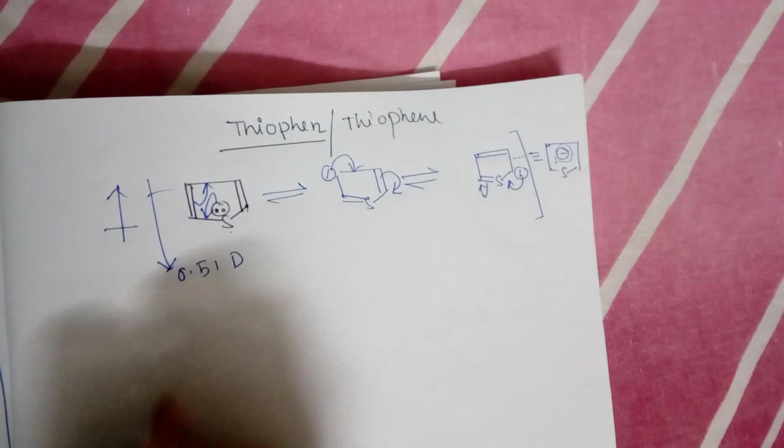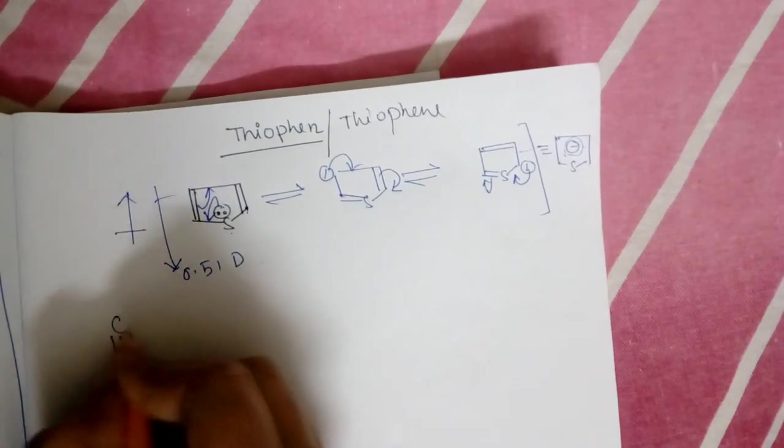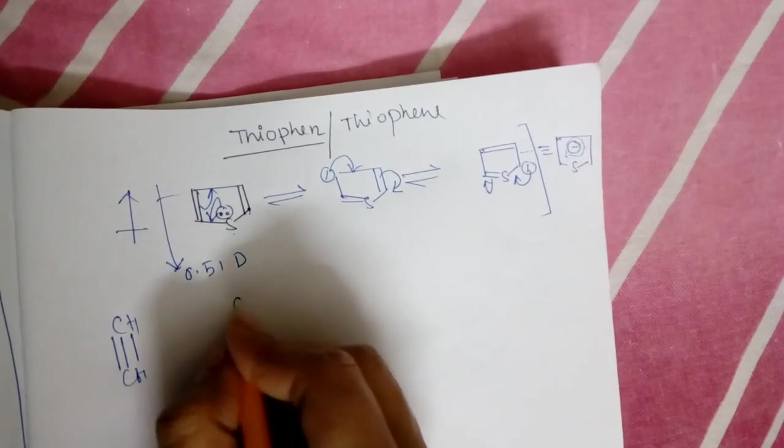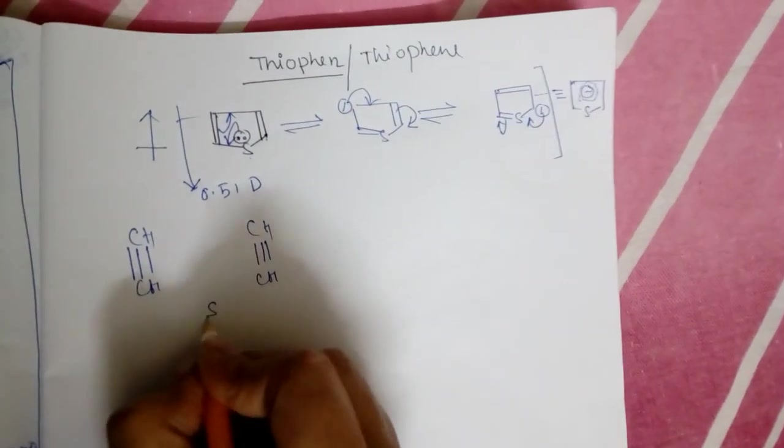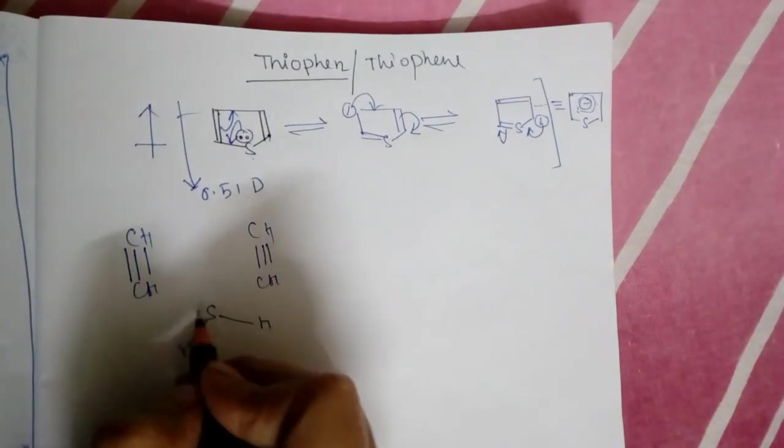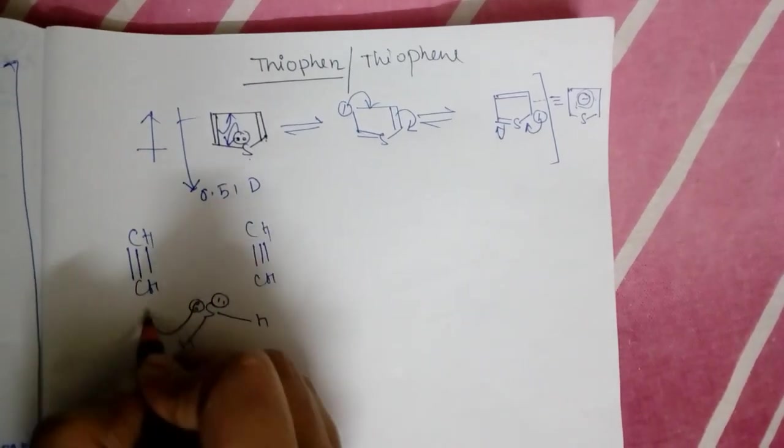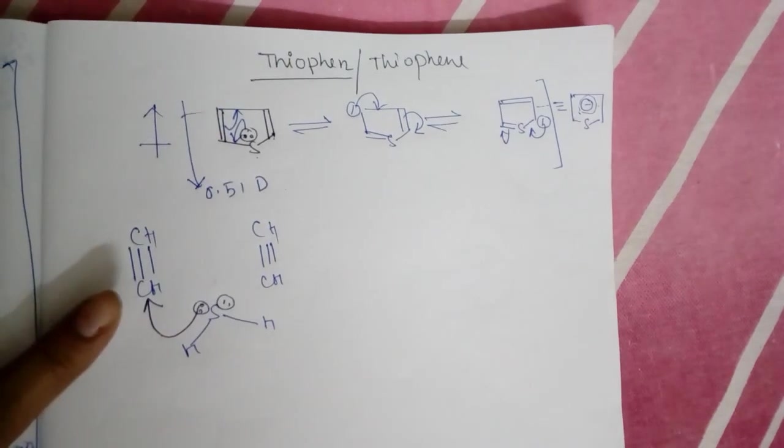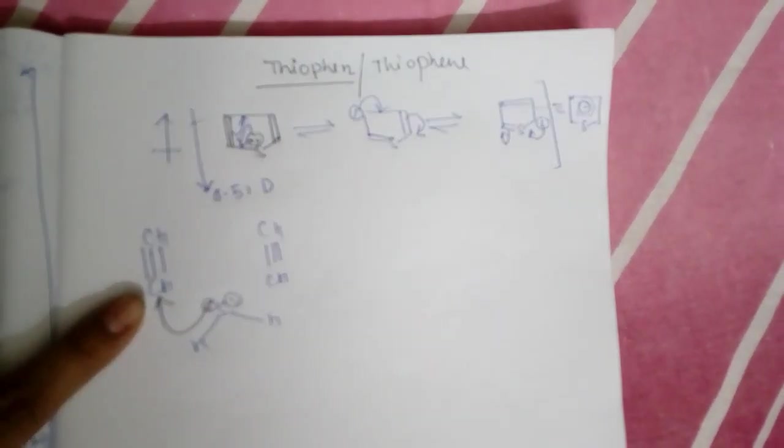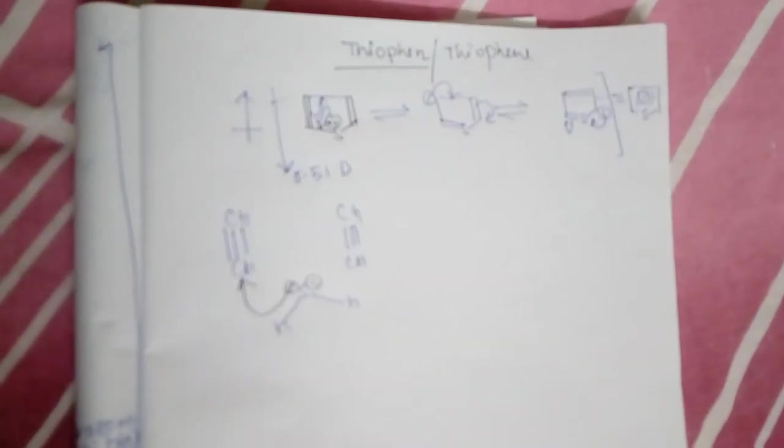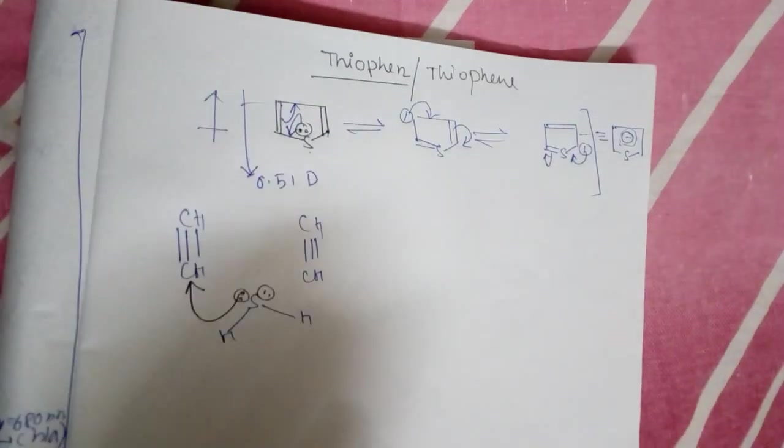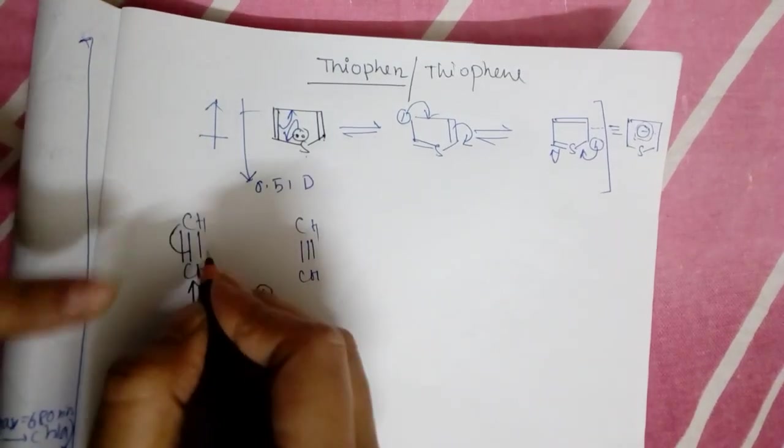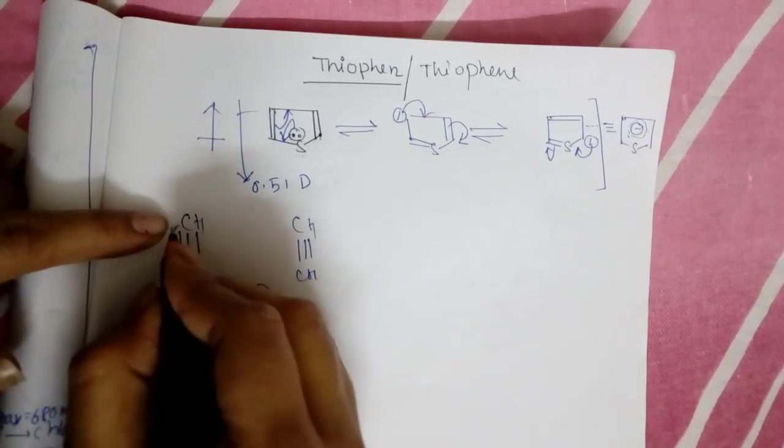It can be prepared in a commercial process from acetylene. It's very easy. Take two acetylene molecules and one H2S molecule. The lone pair of sulfur will attack this carbon, and here electron rich carbon is formed, and this carbon becomes electron rich.